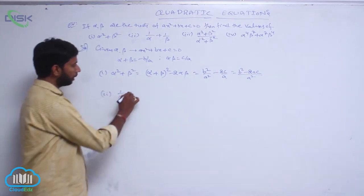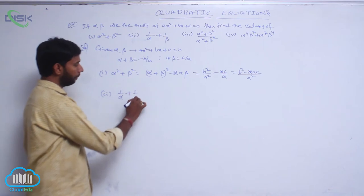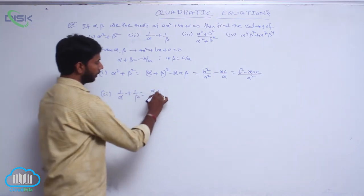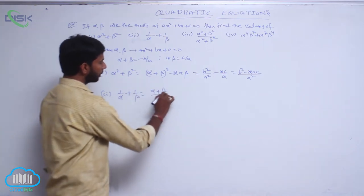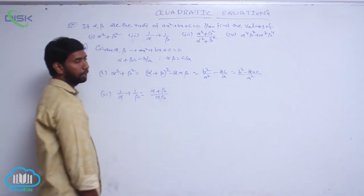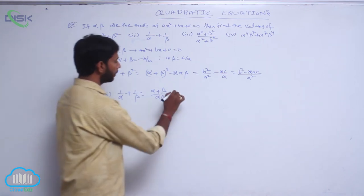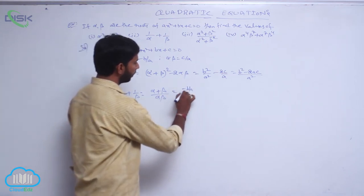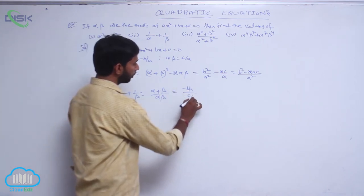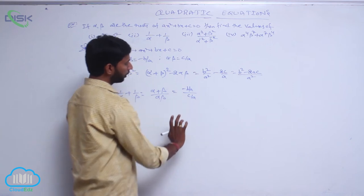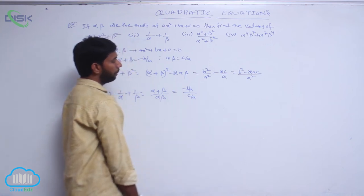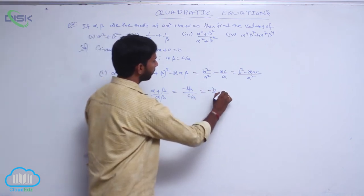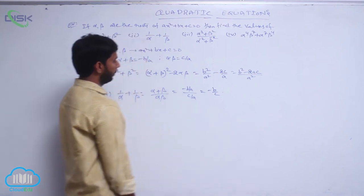For the second one, 1 by alpha plus 1 by beta, taking LCM gives alpha plus beta by alpha beta. Here alpha plus beta is minus b by a and alpha beta is c by a, so it equals minus b by c.